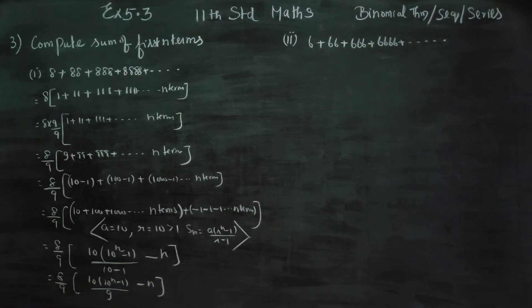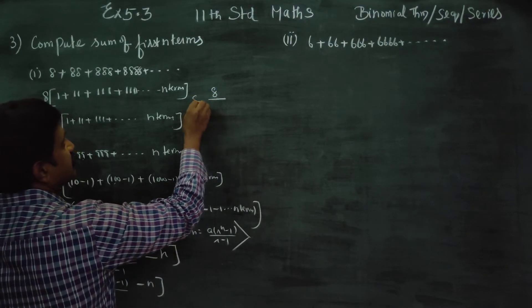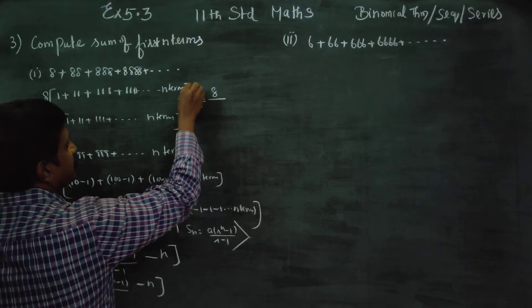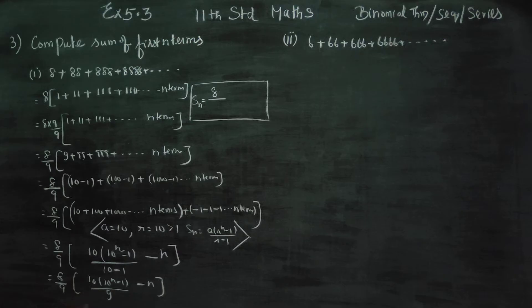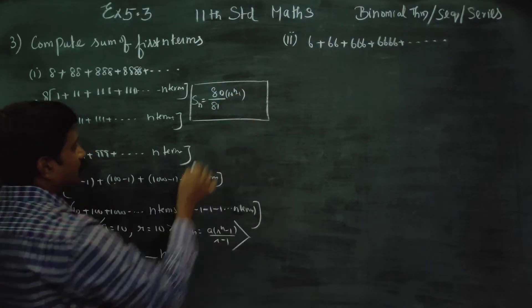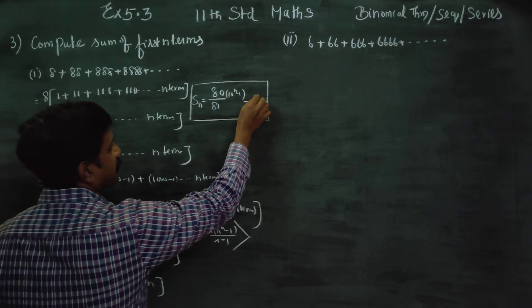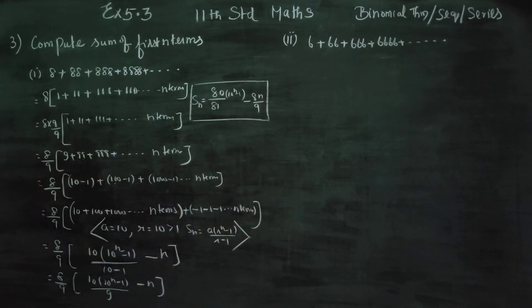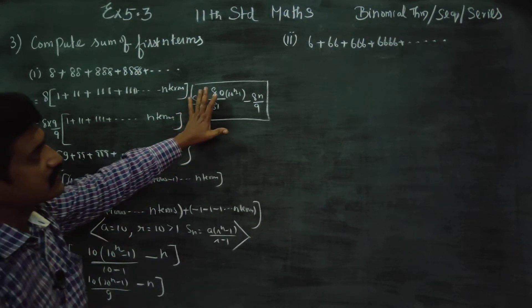The 8 by 9 combined with 1 by 9 gives the final answer. Your S_N answer, your final closing answer, will be: 8 by 9 times 10 into 10 power N minus 1 divided by 81 — since 9 times 9 is 81 — minus 8N by 9. This is your final answer.